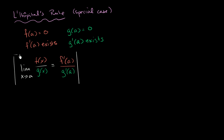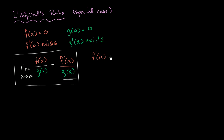Now let's actually prove it. To prove it, we're going to start with the right-hand side and show that if we use the definition of derivatives, we get the left-hand side. So f prime of a, by the definition of derivatives, is equal to the limit as x approaches a of f(x) minus f(a), all over x minus a.